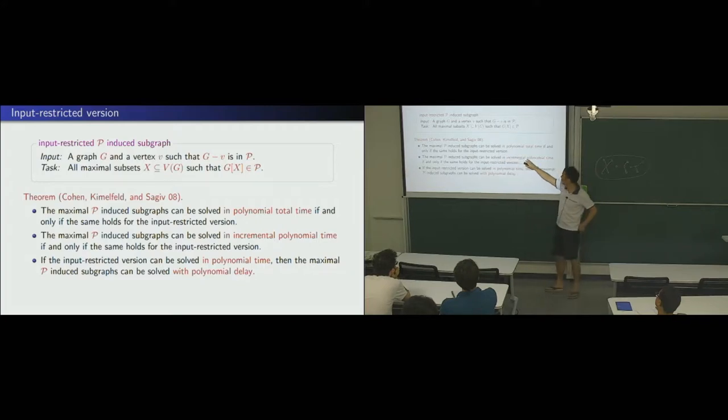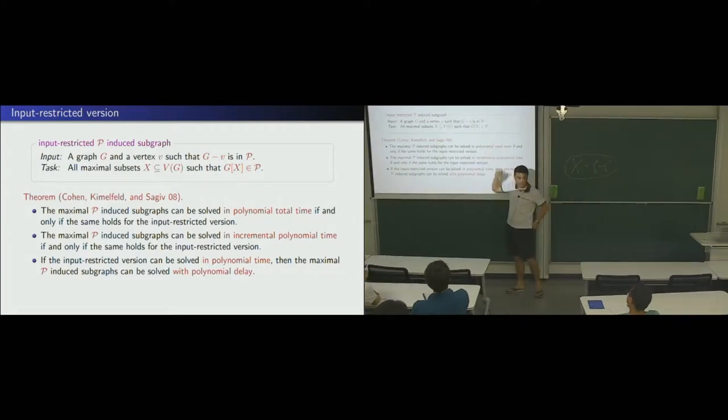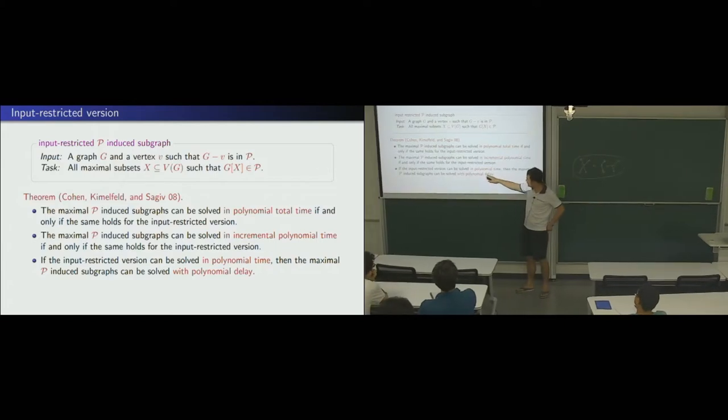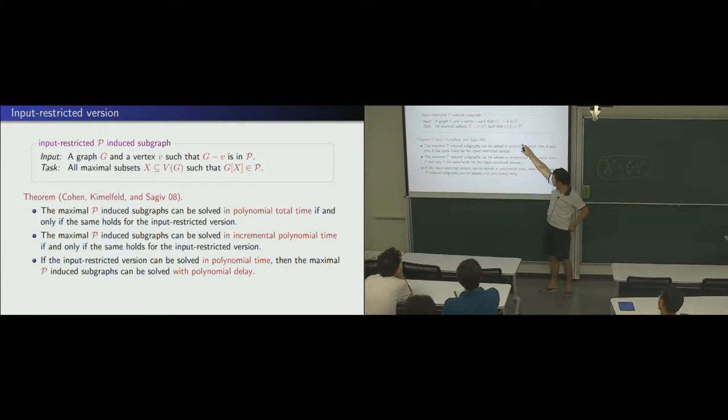Okay. So, they show, if the problem can be solved in polynomial total time, if and only if this special, the simple version can be done. Similarly, if this can be incremental polynomial time, if and only if this can be done, can be done. And finally, this one is not if and only if. So, if this version can be solved in polynomial time, then the general problem can be solved in polynomial delay.